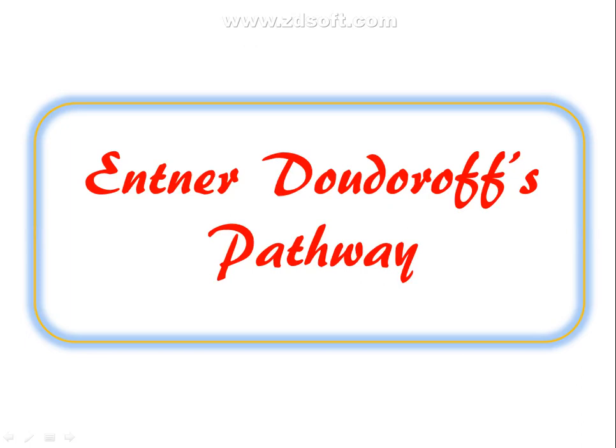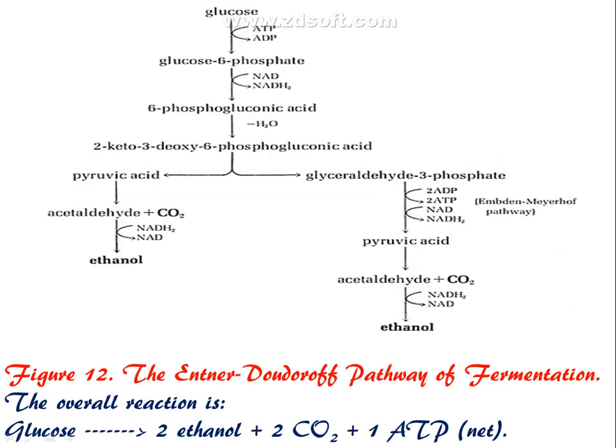Today we are going to see the Entner-Doudoroff pathway. The ED pathway was first deduced by two scientists, Entner and Doudoroff. They said that this particular pathway takes place only in prokaryotic cells. However, the ED pathway occurs mostly in gram-negative bacteria.